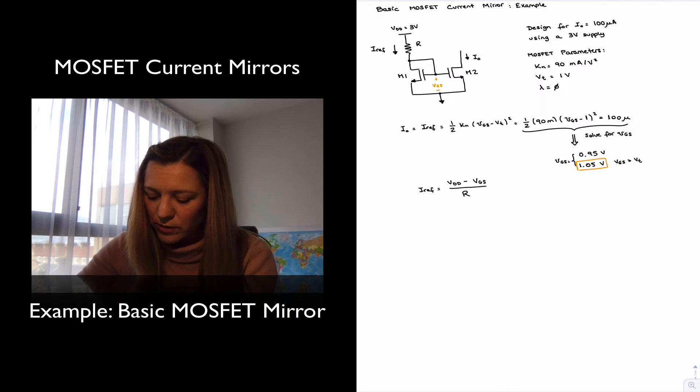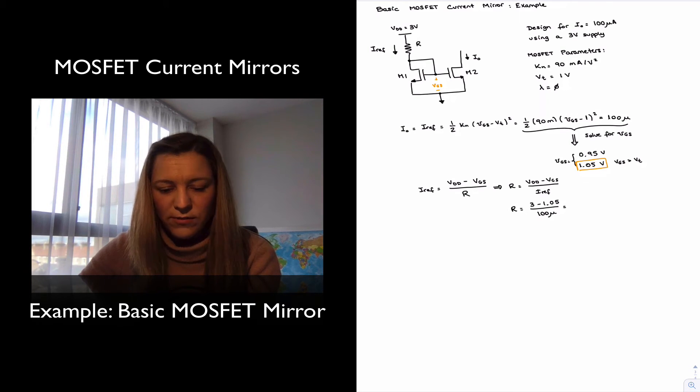So I can solve for my resistor, which will just be VDD minus VGS divided by IREF, or R will be equal to 3 minus 1.05 divided by 100 micro, which gives me 19.5 kilo ohms.